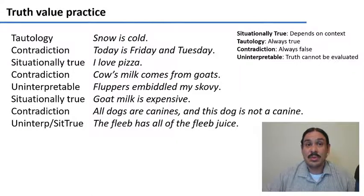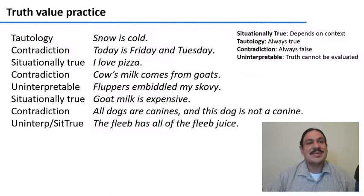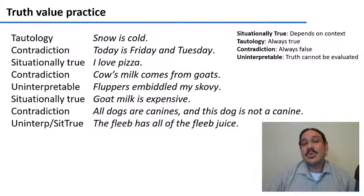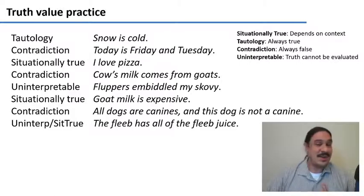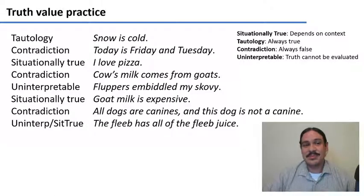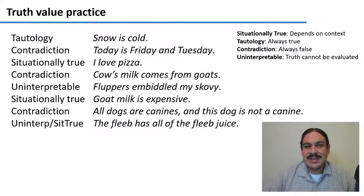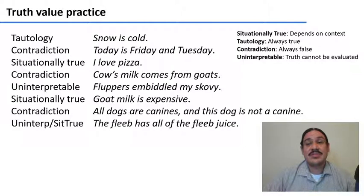Let's see. 'Snow is cold' — practically all snow is cold, so it is a tautology; it's true no matter what context you're in, whether it's snow in spring, at the North Pole, or the South Pole. 'Today is Friday and Tuesday' — it cannot be both days at the same time, so it has to be a contradiction; it's always false regardless of context.